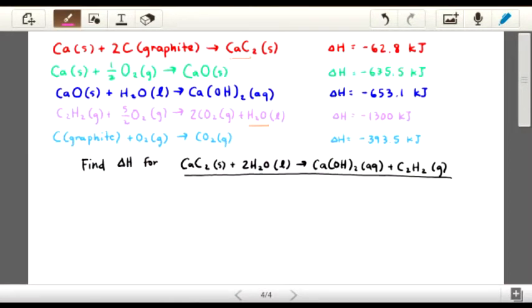So we're going to do this last example with five equations given, and we're trying to find the enthalpy change for this equation on the bottom, the black one.